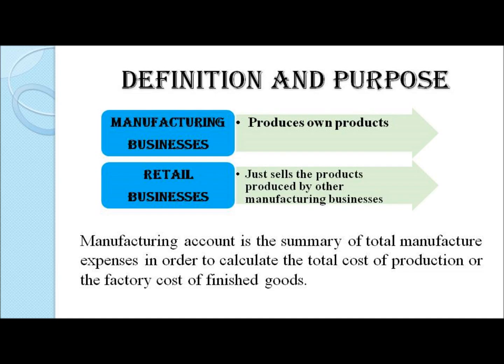Businesses can be broadly classified into two types. Retail businesses purchase finished products and sell them to end customers, like Walmart. Other businesses manufacture their own products and sell them to customers, like Ford and Tesla. Since these businesses produce their own products for sales, it is quite natural that they will determine the cost incurred in producing the product, which is done by preparing a manufacturing account.